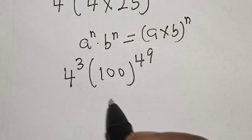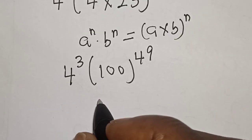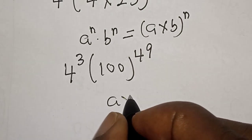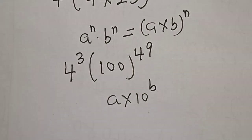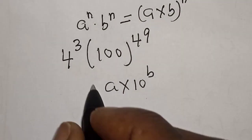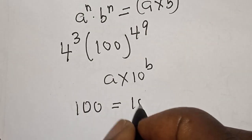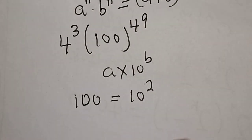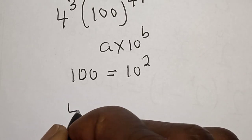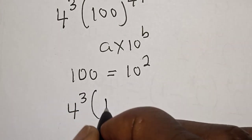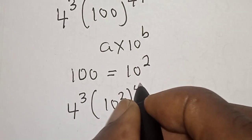Now we want our answer to be in the form of a times 10 raised to some power. Then, 100 is equal to 10 squared, because 10 squared is 10 times 10, that is 100. So we have 4 raised to power 3 multiplied by 10 squared, raised to power 49.